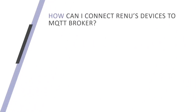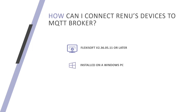Now how do I connect Rayno devices to an MQTT broker? The following requirements first need to be met. You need to have Flexisoft version 2.36.05.11 or later, available on our website in the software download section — I will be posting a link in the description below. After you have downloaded Flexisoft, install it on a Windows machine. The MQTT feature is currently provided on all Ethernet-based FP4 devices.